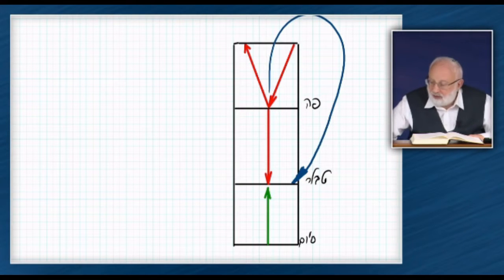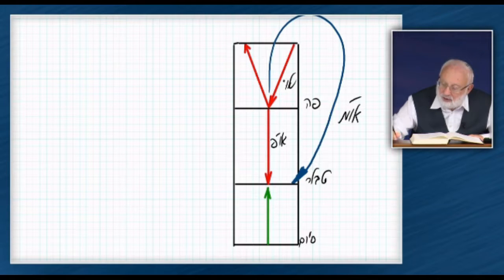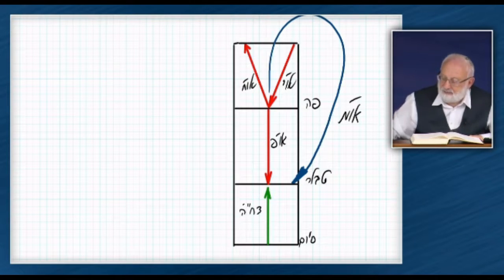Still, it's a Kli that's filled with light. It has Or Makif, Or Pnimi, Or Yashar, Or Chozer. Or Chozer. And here, it rejects it.